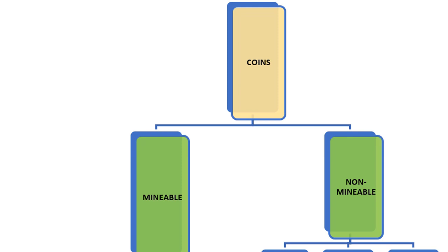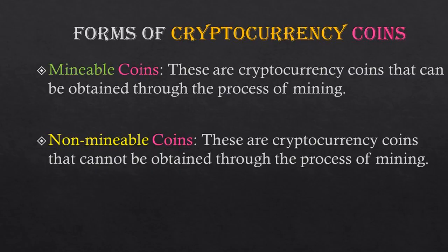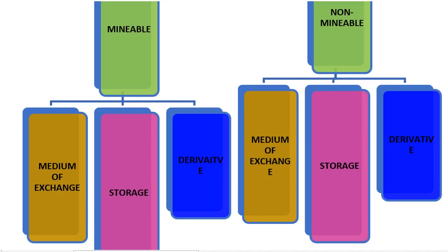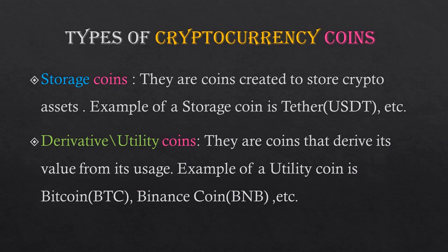Under coins we also have forms: minable coins and non-minable coins. Minable coins are cryptocurrency coins that can be obtained through the process of mining. Non-minable coins cannot be obtained through mining. Under cryptocurrency forms we also have types: medium of exchange coins, storage coins, and derivative coins — and these apply to both minable and non-minable coins.